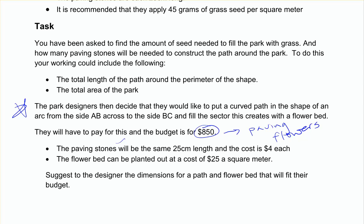So the park designers decided they'd like to put in a curved path in the shape of an arc from side AB across to side BC and fill this sector. They're giving you a hint there in terms of what this might look like. Right, so a sector. It's going to be that sort of shape. And this creates a flower bed.